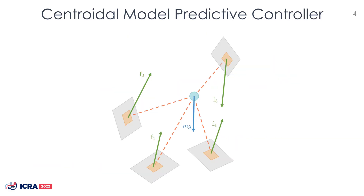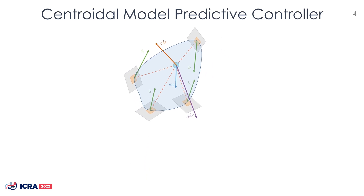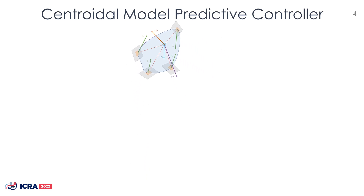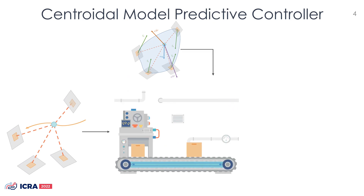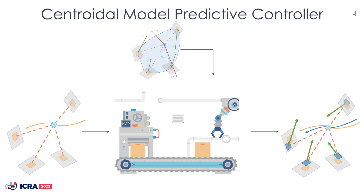The dynamics of a system in contact with the environment can be decomposed into joint dynamics and centroidal dynamics. Considering the centroidal dynamics and a set of nominal contacts, the reduced model controller aims to generate feasible contact branches and location. The control problem is formulated using the model predictive control framework.